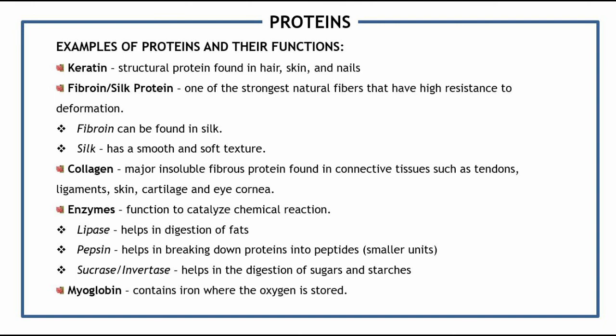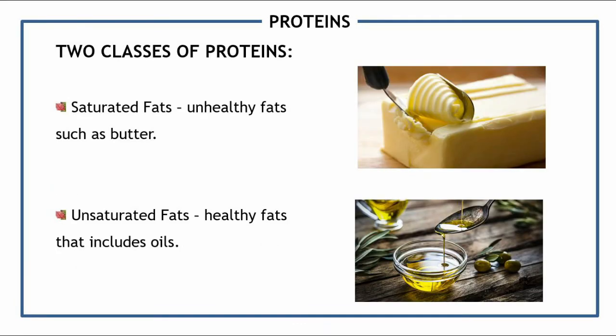Myoglobin is also an example of a protein; it contains iron where oxygen is stored. There are two classes of fats: saturated fats, commonly known as unhealthy fats — a basic example being butter — and on the other hand, unsaturated fats, commonly known as healthy fats, which include oils mostly extracted from plants.